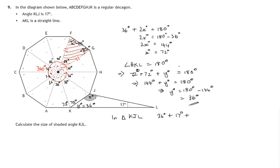plus the angle we're trying to find, z degrees, is equal to 180. Again, the three angles in this triangle add up to 180.